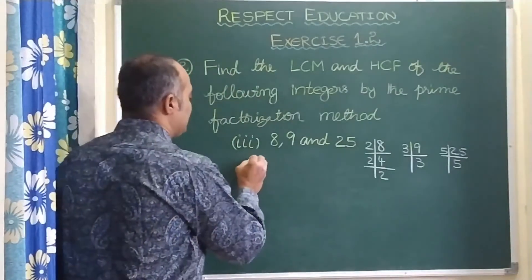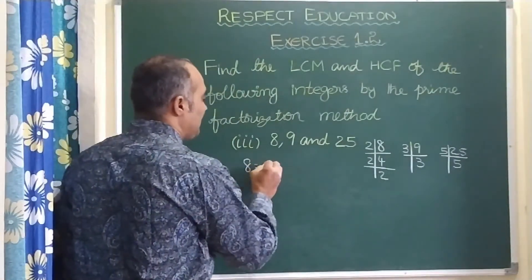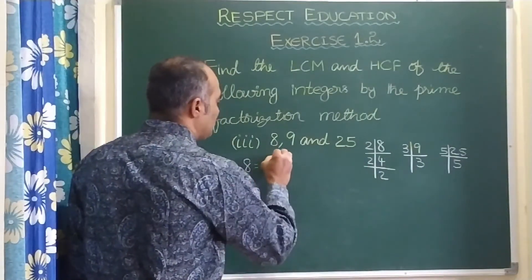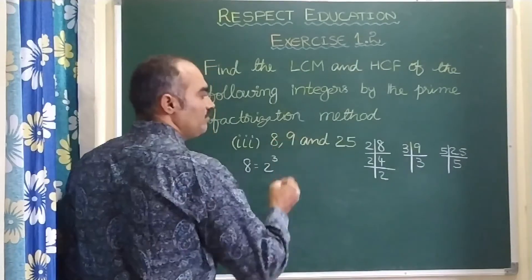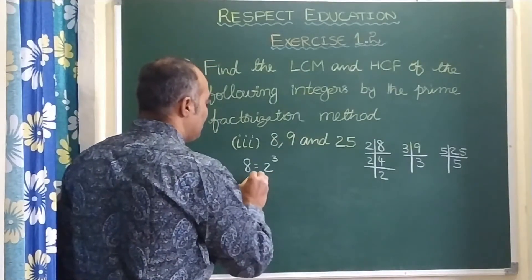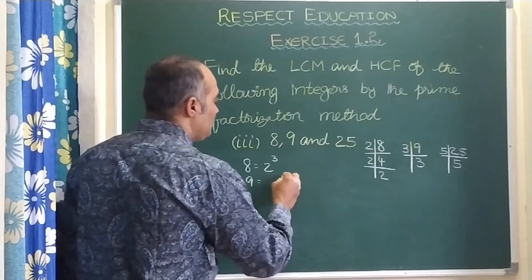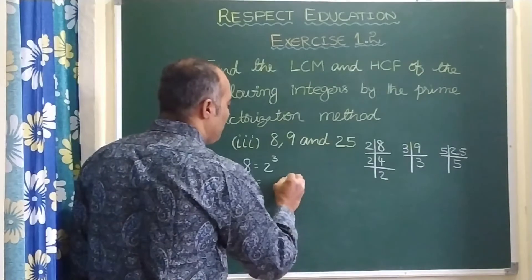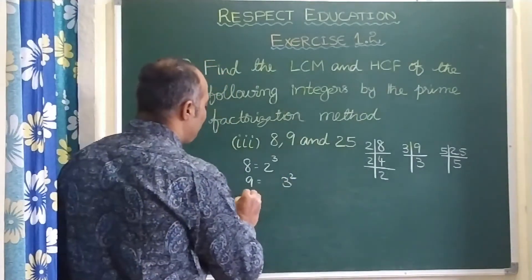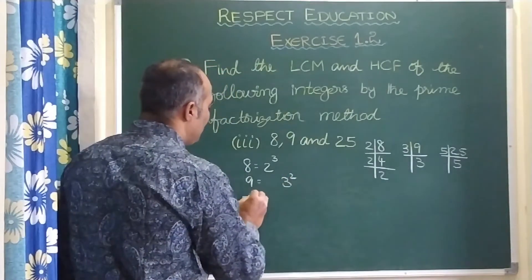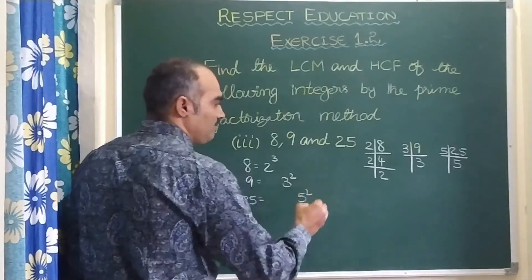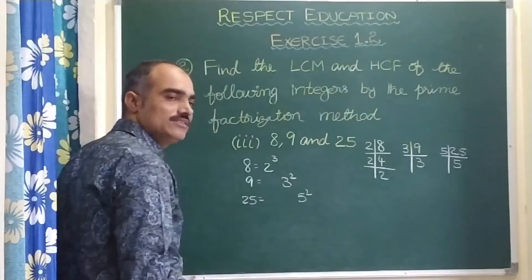Now let us write these numbers again. 8 is equal to 2 into 2 into 2, we can write it as 2 cube. 9 can be written as 3 into 3, means 3 square. 25 can be written as 5 square — 5 into 5 is 5 square.